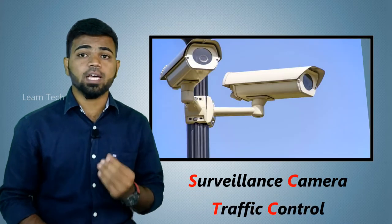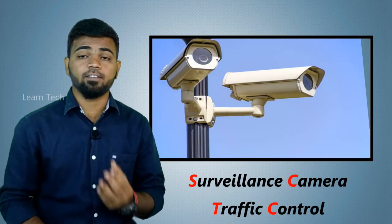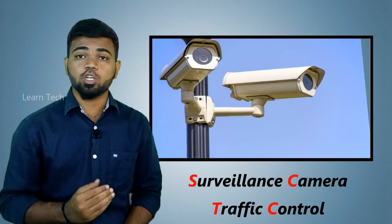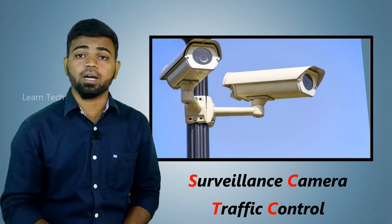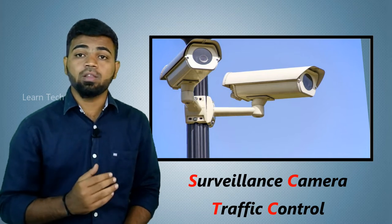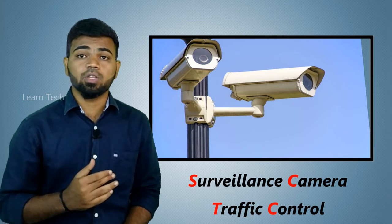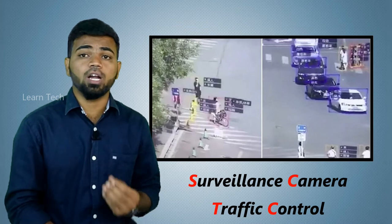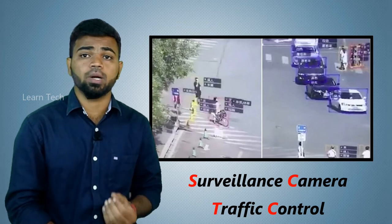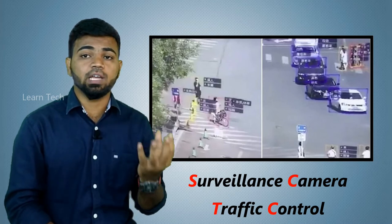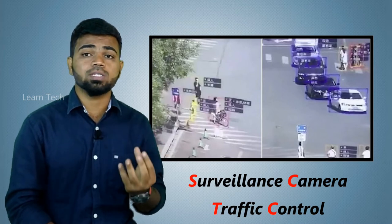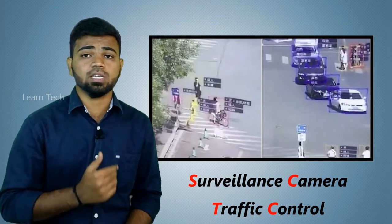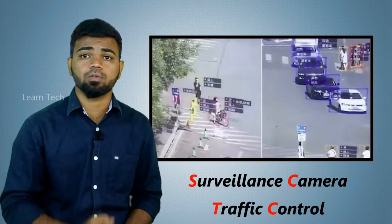The last type is surveillance-based traffic signals. In China, you can use traffic signals managed by surveillance cameras. This uses artificial intelligence. With artificial intelligence, it can capture images from the same camera and use traffic signals accordingly.